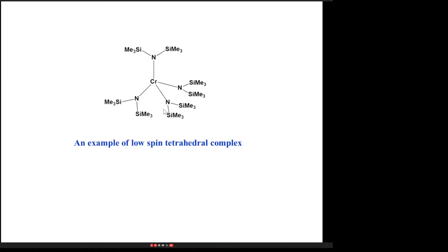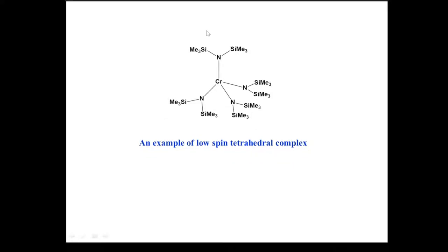There are a few exceptions of low spin tetrahedral complexes. For instance, a chromium complex with increased steric hindrance at the metal center can be low spin. But mostly tetrahedral complexes are high spin. In examinations, a common question is: why are tetrahedral complexes mostly high spin while octahedral complexes can be both high spin and low spin? The answer is that the crystal field splitting of tetrahedral complexes is very low due to the two factors already described.